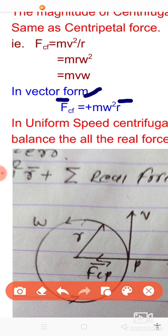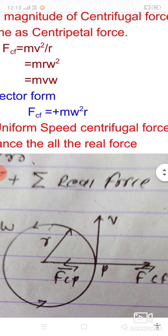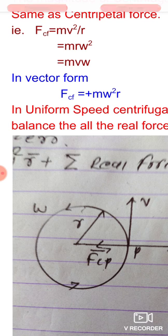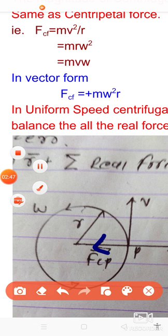In uniform speed, the centrifugal force balances all the real forces. The real forces give the centripetal force, and this motion is circular motion, uniform circular motion. The centripetal force is the resultant of all real forces and is toward the center.